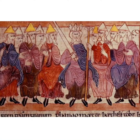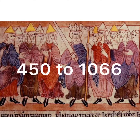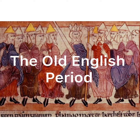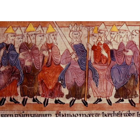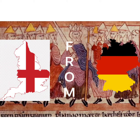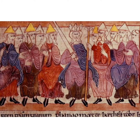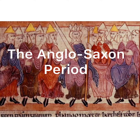The span from 450 to 1066 is called the Old English period. In this period, the Jutes, Angles, and Saxons came to England from Germany. They defeated the English people and started their reigns. Hence, this period is also called the Anglo-Saxon period.